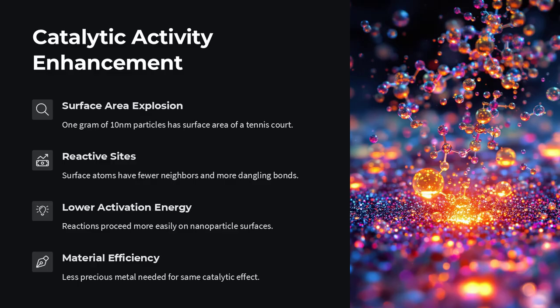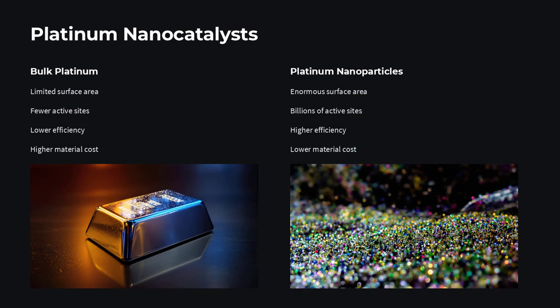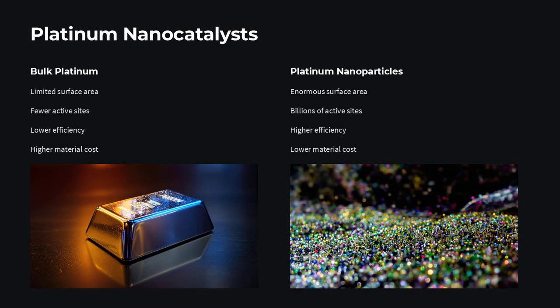Why do materials shrunk to nanometer dimensions, just a few dozen to a few thousand atoms, suddenly display colors, melting points, magnetic behaviors, and chemical reactivities utterly unlike their bulk counterparts?